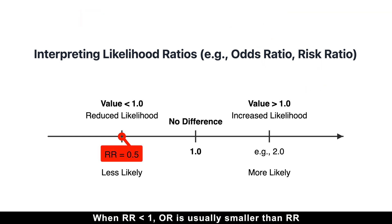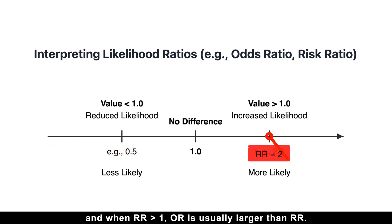Specifically, when risk ratio is below 1, odds ratio is usually smaller than risk ratio. And when risk ratio is above 1, odds ratio is usually larger than risk ratio.